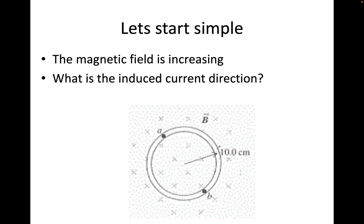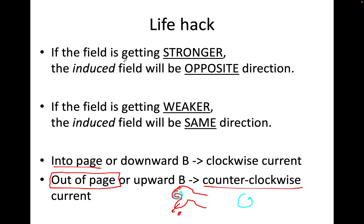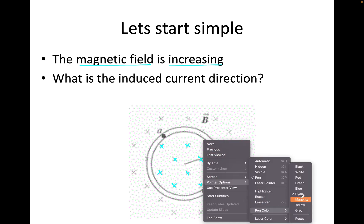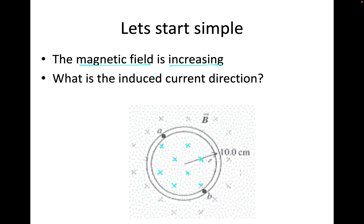Starting with an example: the magnetic field is increasing. This magnetic field — marked with X's, which means going into the page — is increasing. So I am getting more X's going into the page. That means it's getting stronger. So the induced field must be in the opposite direction. Opposite of into the page is out of the page — the induced field should be coming out of the page, shown as dots instead.